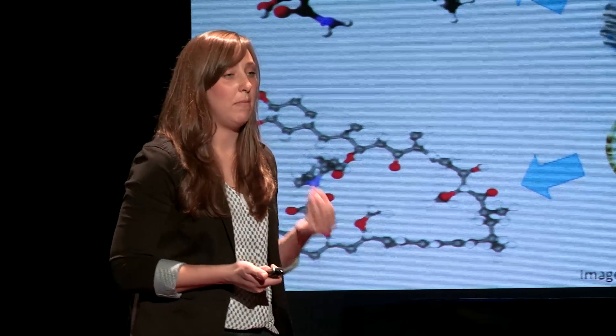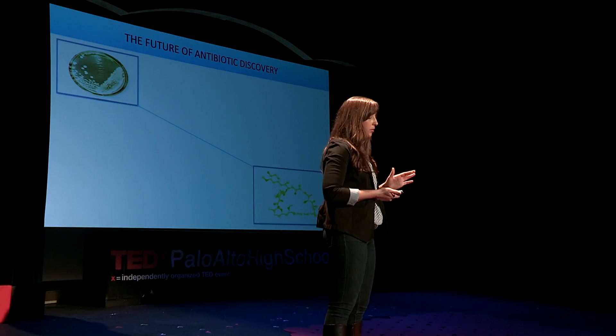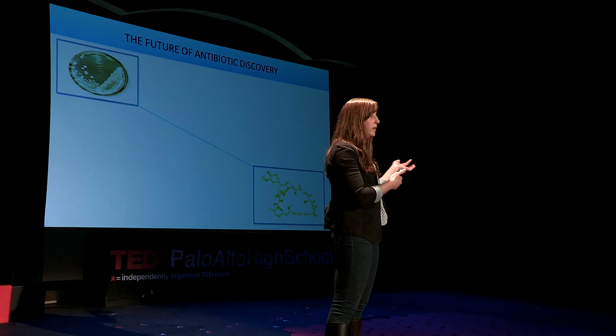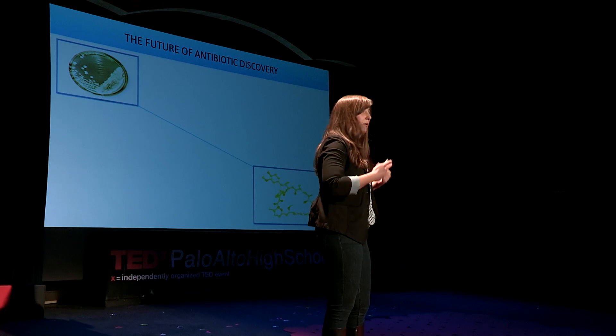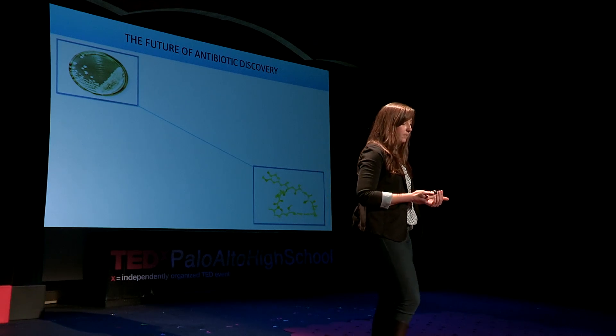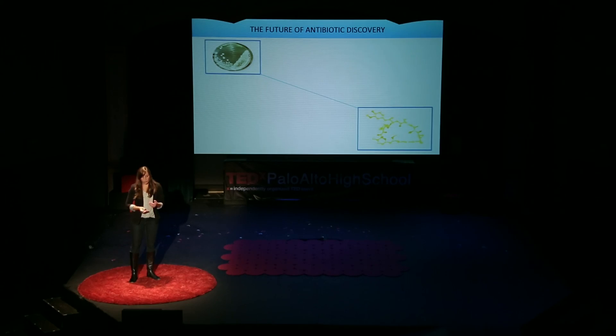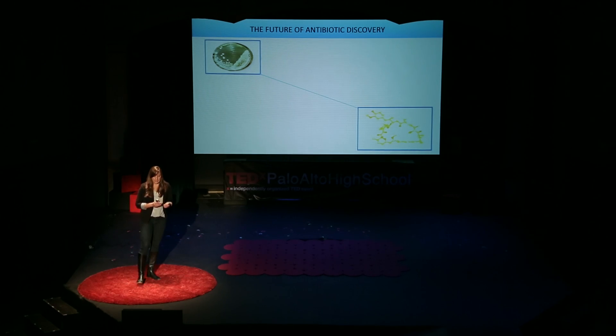We know that these actinomycetes are really efficient at making these antibiotics. In the past, all we've done really is go from the organism straight to the antibiotic. Again, we're seeing these resistant varieties of bacteria where these antibiotics are no longer effective. So one way to combat that resistance is to change the structure of the antibiotic just a little bit — either go into a chemistry lab and build a new antibiotic from scratch, or take the existing antibiotic and modify the structure after it's come out of the bacteria.